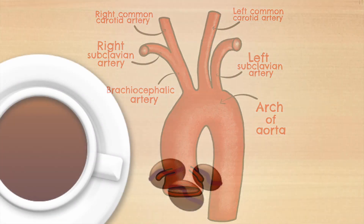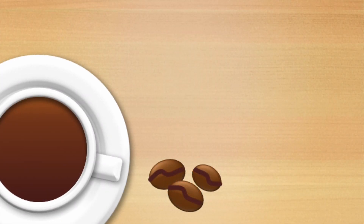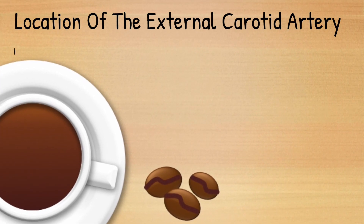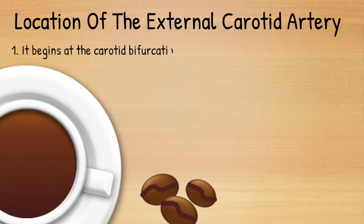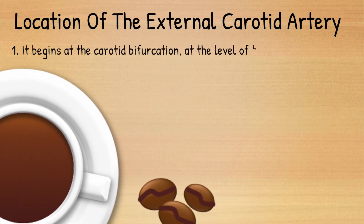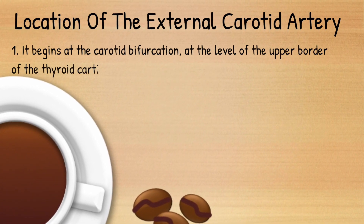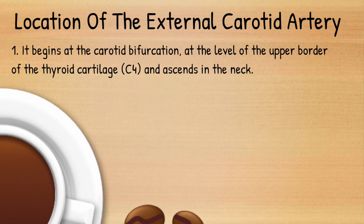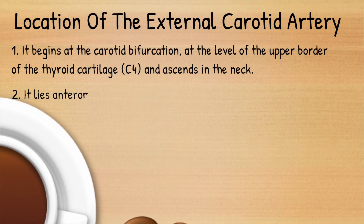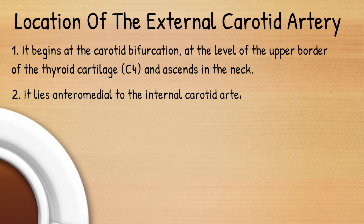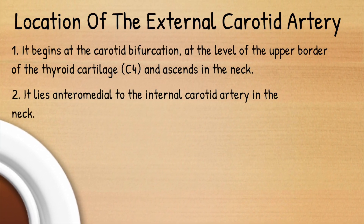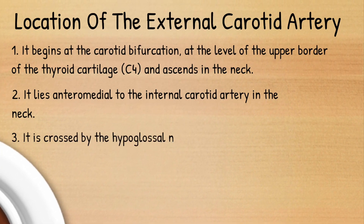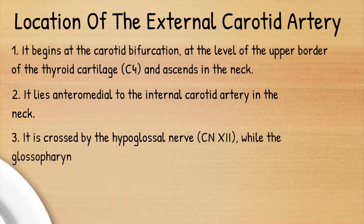The external carotid begins with the internal carotid at the bifurcation of the common carotid artery. The carotid bifurcation occurs at the level of the upper border of the thyroid cartilage at spinal level C4. The external carotid lies anteromedial to the internal carotid in the neck and is crossed by cranial nerve 12, the hypoglossal nerve.